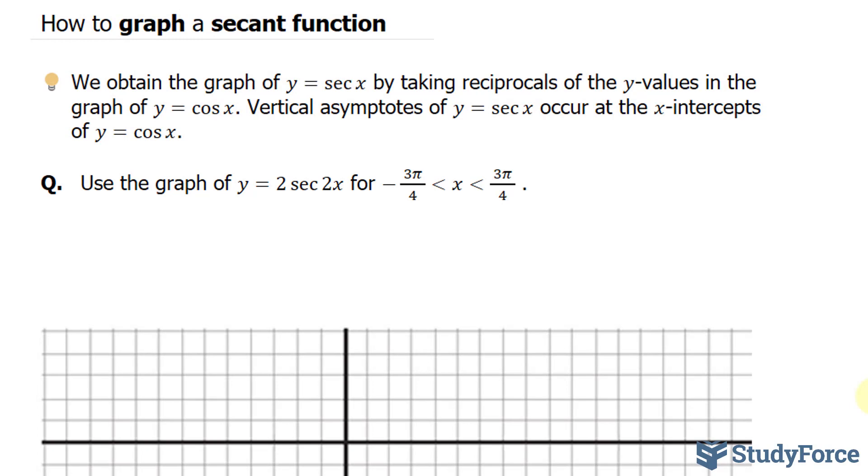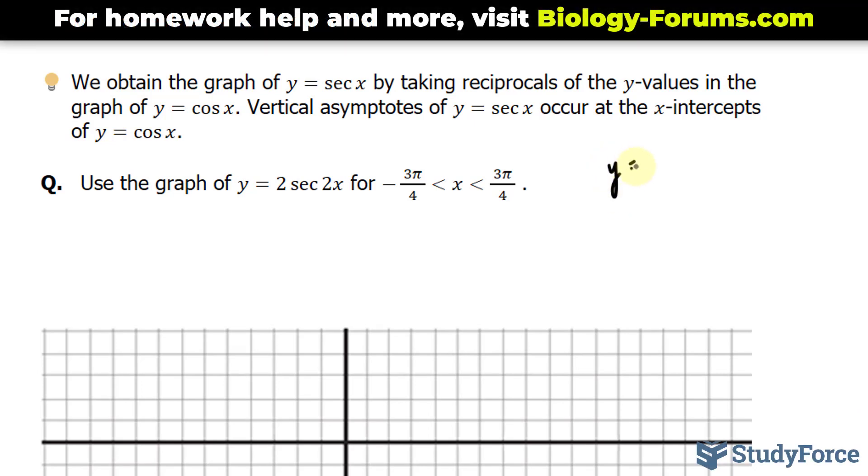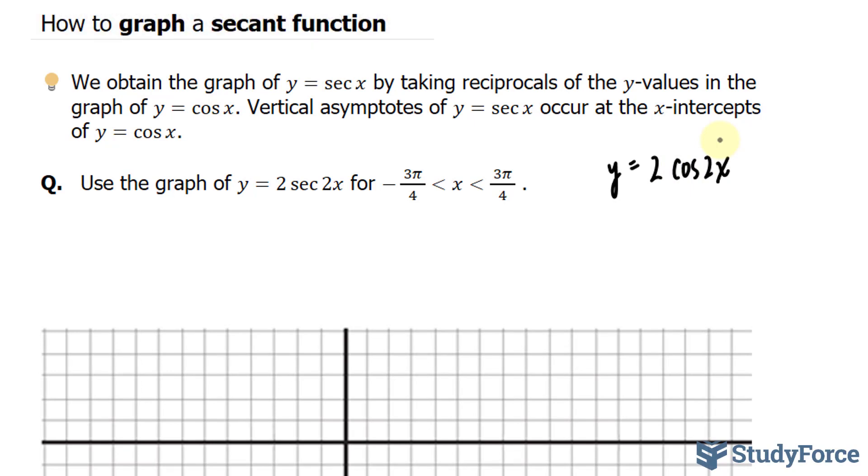To do this, we need to graph this equation as if it was in terms of cosine. So we have y equals 2 cosine 2x. Once we've graphed y equals 2 cosine 2x, then we can find out where our asymptotes are, which will be where the wave crosses the x-axis. Let me show you what I mean.